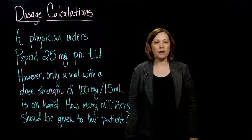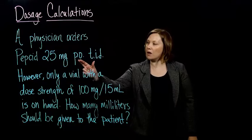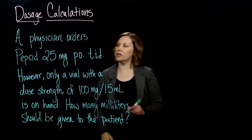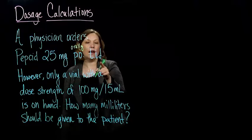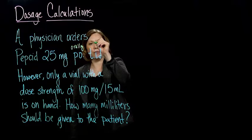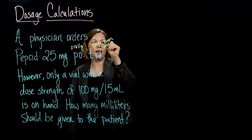All right, so another example. A physician ordered PEPCID 25 milligrams, and then we've got PO, which in the last example we found was orally, and TID, that means three times per day.